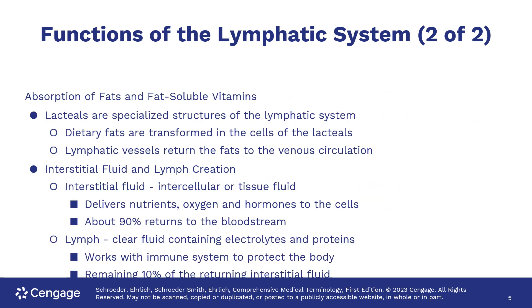How does it accomplish these functions? Within the lymph system, there are special structures called lacteals that transform the fats from our diet so we can absorb it. The lymph vessels then return the fats to the venous system.